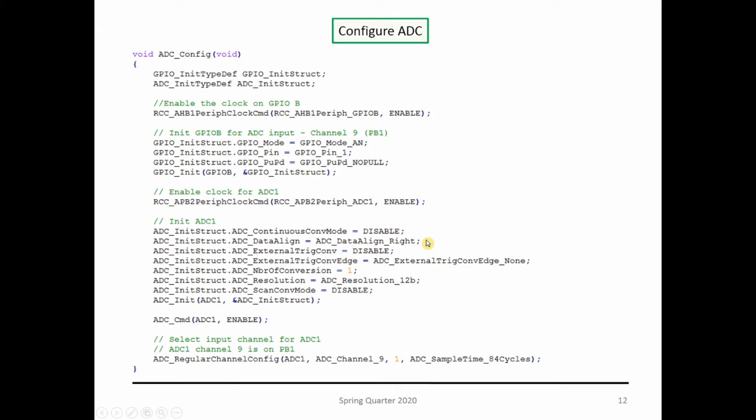The data is aligned right, external trigger disabled, number of conversions is one, resolution is 12 bits. I pass that to the structure, enable my ADC, and then attach pin number one to channel number nine.